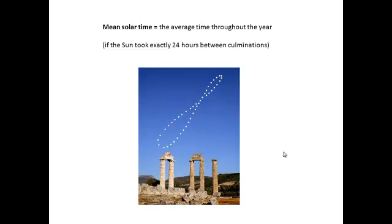What's more useful is if we talk about the average. If we imagine that every day was exactly 24 hours long, and that the sun culminated at the same time every day, we call this our mean solar time — the average throughout the year. We do this for convenience because watches would be useless unless every day was 24 hours long.